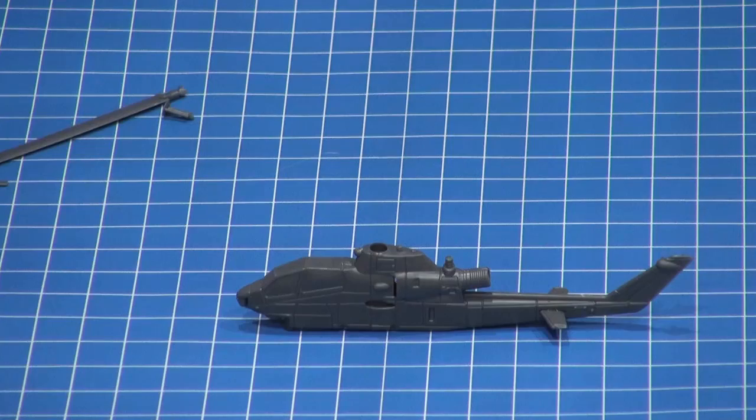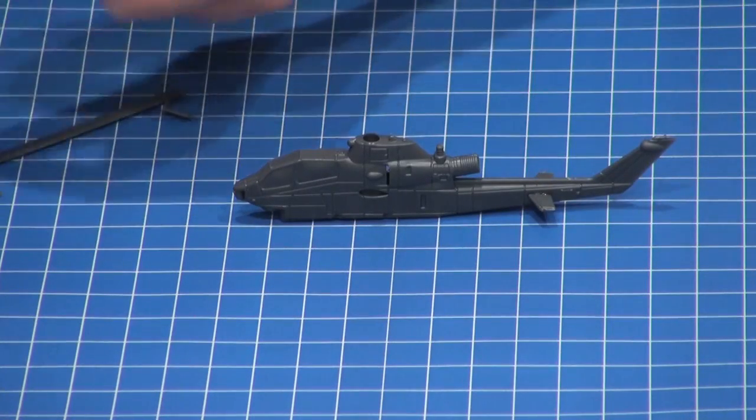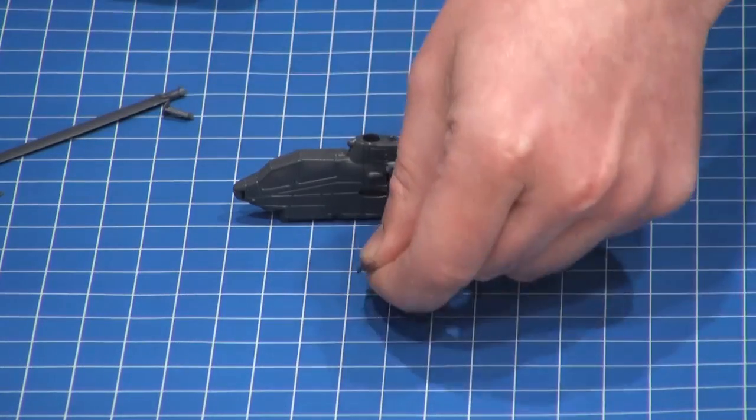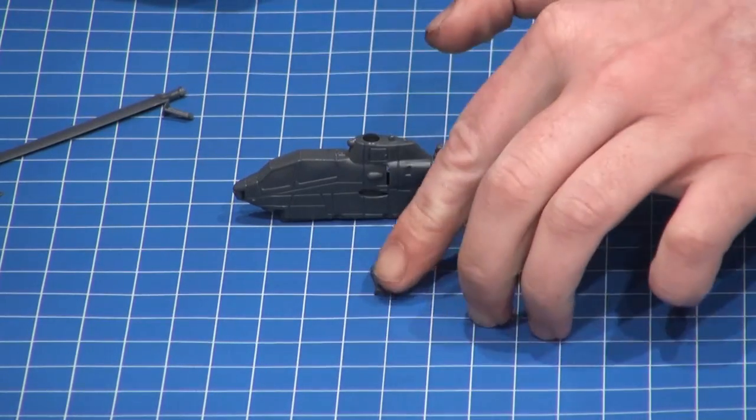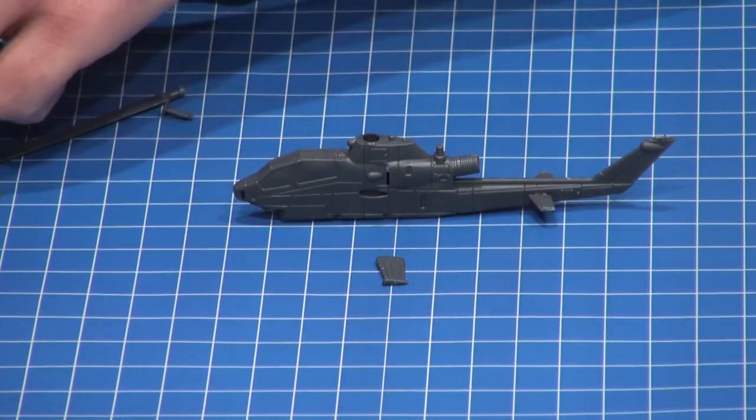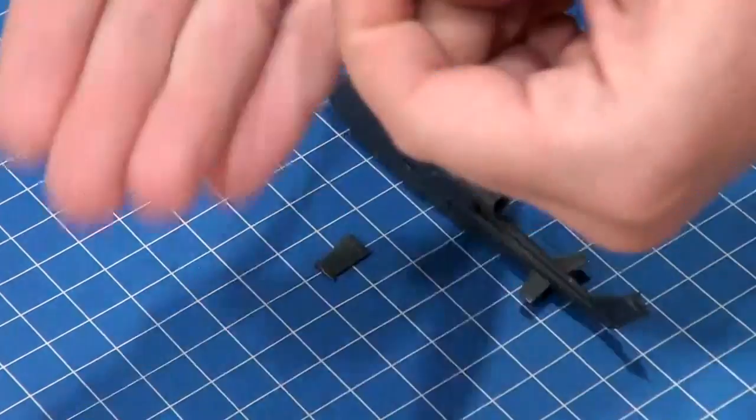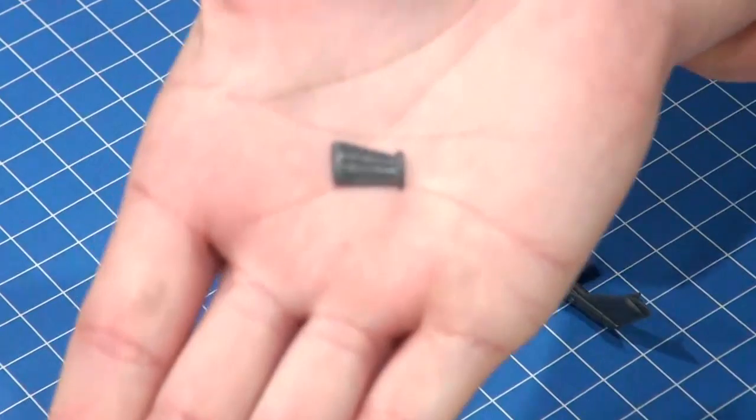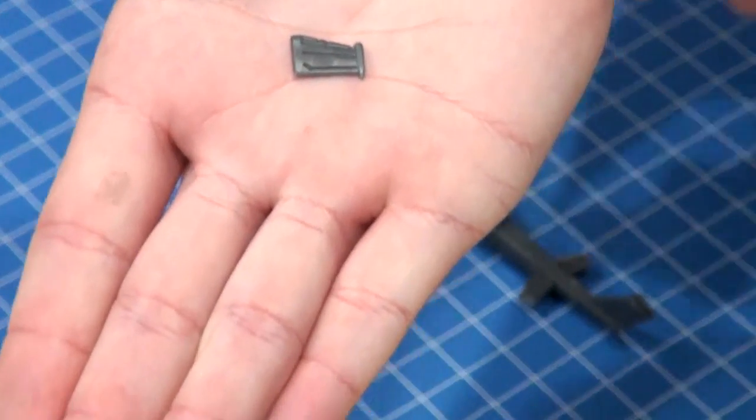The next part that I attach when I'm assembling this model is the two winglets that hold the weapons which is this piece here. They have a specific orientation to the side.